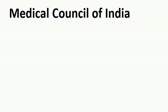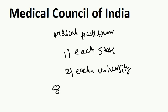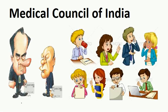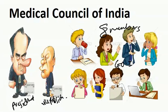Now let us see the structure of the Medical Council. The Medical Council consists of medical practitioners from each state, then from each university, and there are 8 members from the Government of India. In the elected committee we have a President and Vice President, along with the 8 members from Government of India.